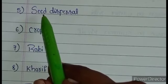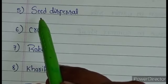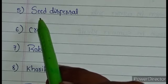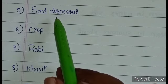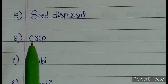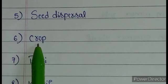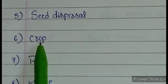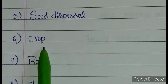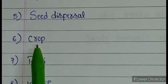The next keyword is seed dispersal. Scattering of seeds away from the parental plant is called seed dispersal. The next keyword is crop. A crop means a plant that grows on a farm in large numbers is called a crop. Usually farmers grow different kinds of crops.